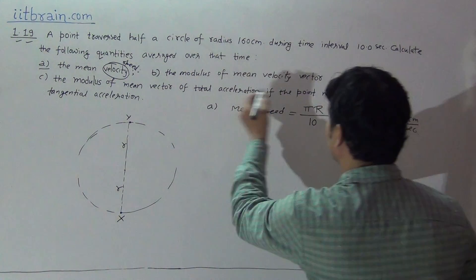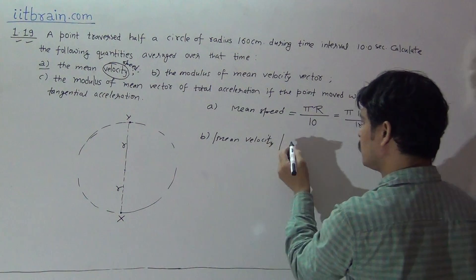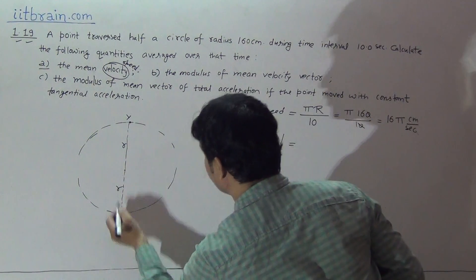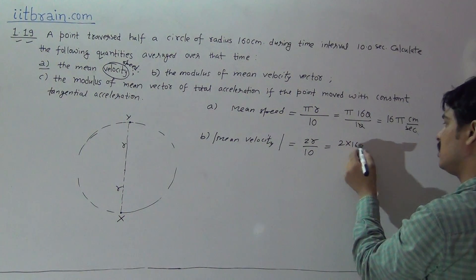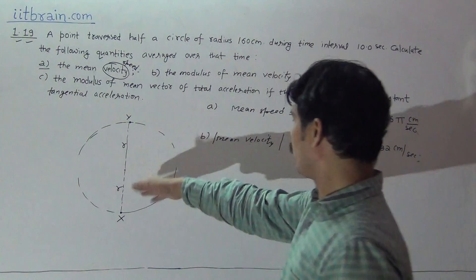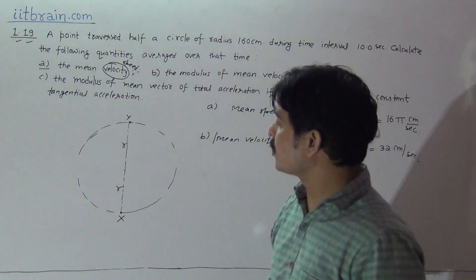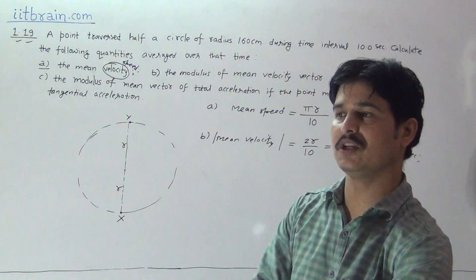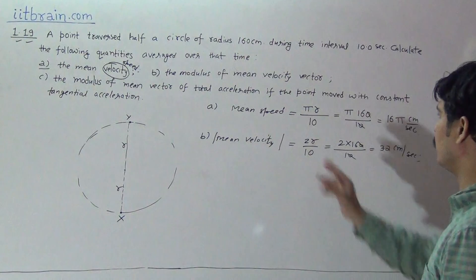For the second part, the modulus of the mean velocity vector equals total displacement divided by total time. From X to Y, the net displacement equals the diameter = 2R = 2 × 160 = 320 cm. Dividing by 10 seconds gives 32 centimeters per second. So mean velocity modulus is 32 cm/s, while mean speed is 16π — mean speed is greater than mean velocity.